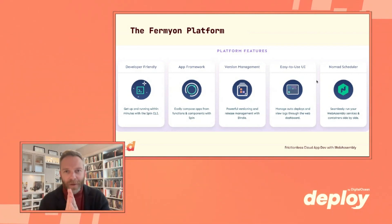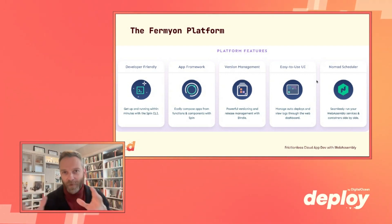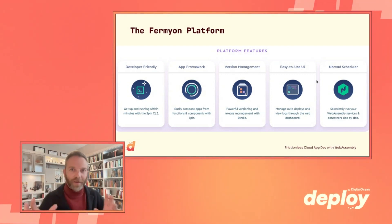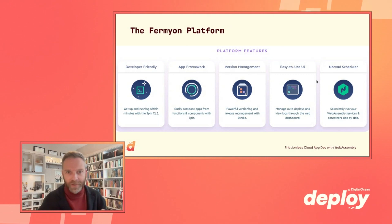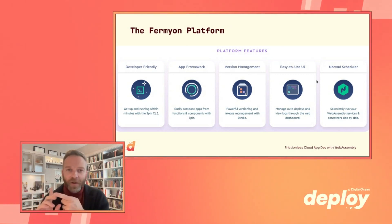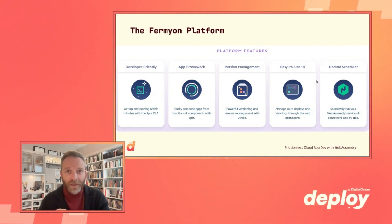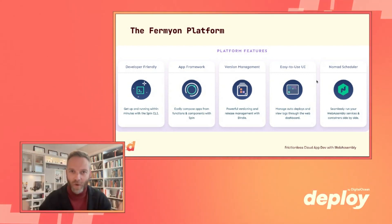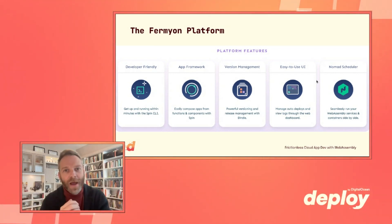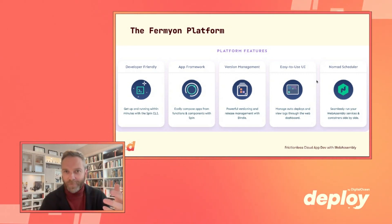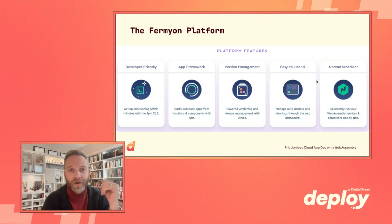Fermyon Platform provides a server-side environment for running WebAssembly modules built using the Spin framework. Spin provides the developer-friendly get-up-and-running experience, while the platform layers on version management, deployment, an easy-to-use user interface, and scheduling. When you roll out Fermyon Platform you'll have one or more worker nodes, and we use Nomad — HashiCorp's orchestrator, similar in theory to Kubernetes but more generic — to schedule WebAssembly modules, and it allowed us to slot WebAssembly alongside containers and other kinds of workloads.